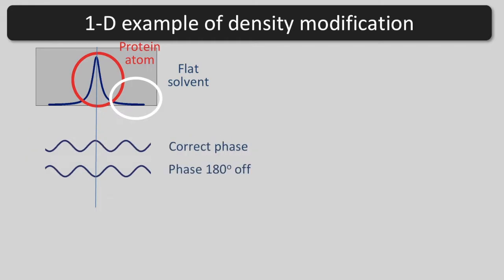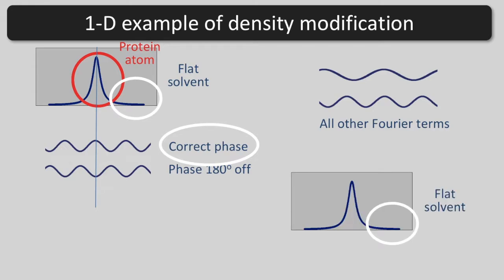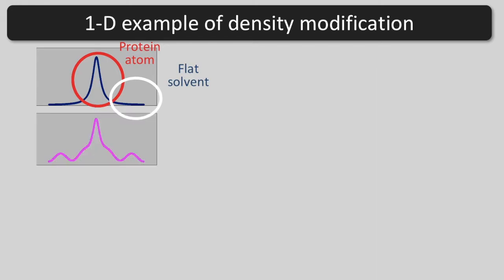We are going to figure out the phase of one Fourier term given two things: one, the phases of all the other Fourier terms, and two, our expectation that the solvent is flat. Let's take out one Fourier term. This will make a ripple in the map. Notice that the solvent now has that ripple in it, and that the protein atom is distorted.